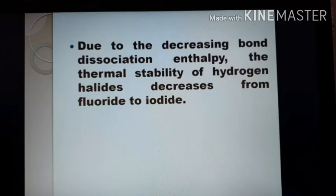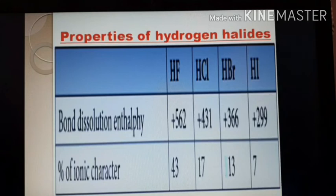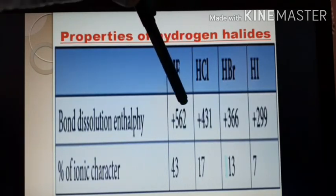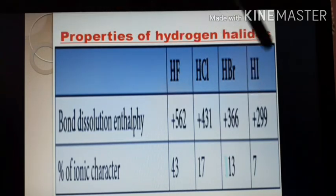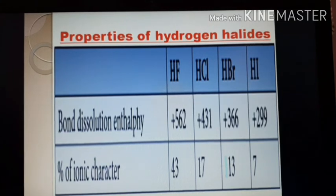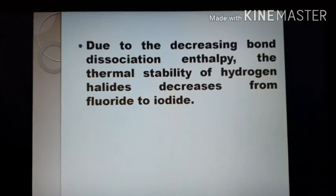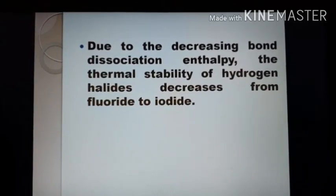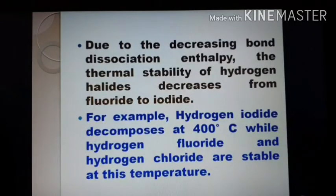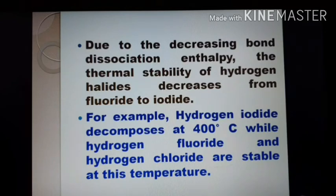The energy required to break the bond in HF is high, so HF is more stable, while very little energy is needed to break the bond in hydrogen iodide. For example, hydrogen iodide decomposes at 400 degrees Celsius, while hydrogen fluoride and hydrogen chloride are stable at this temperature because their bond dissociation energy is higher.